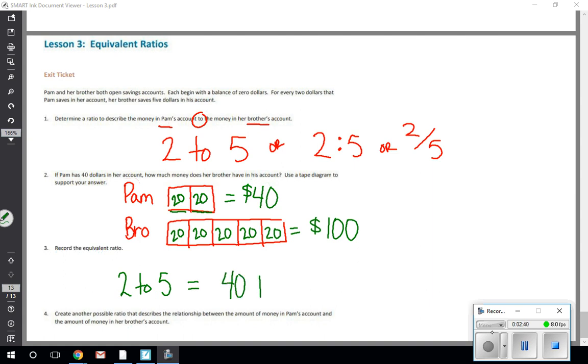On the very last one it says create another possible ratio that describes the relationship between the amount of money in Pam's account and the amount of money in her brother's account. If we take a look at that diagram, as long as each of these spaces has an equal amount, I could have each of these be 200. If each of them were 200, Pam would have a total of 400. If each of them were 200, then her brother would have 200 times 5, which would be $1,000.